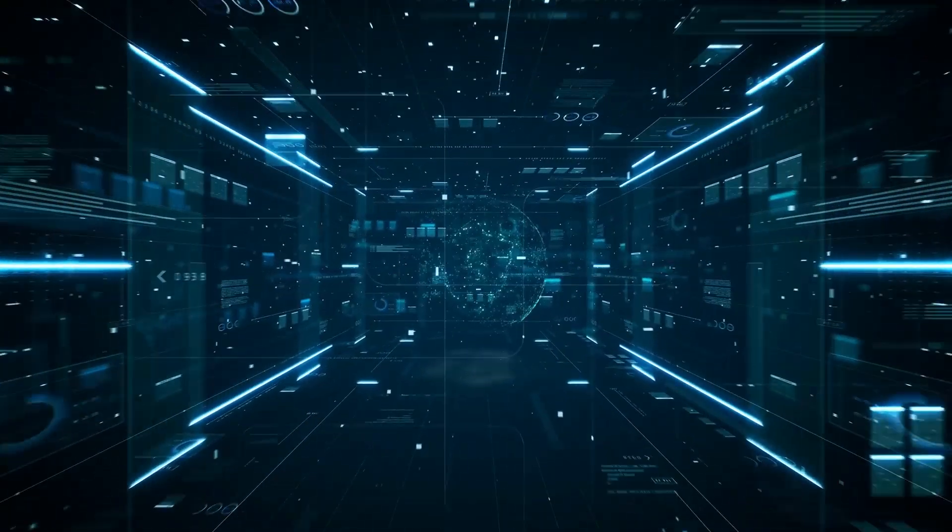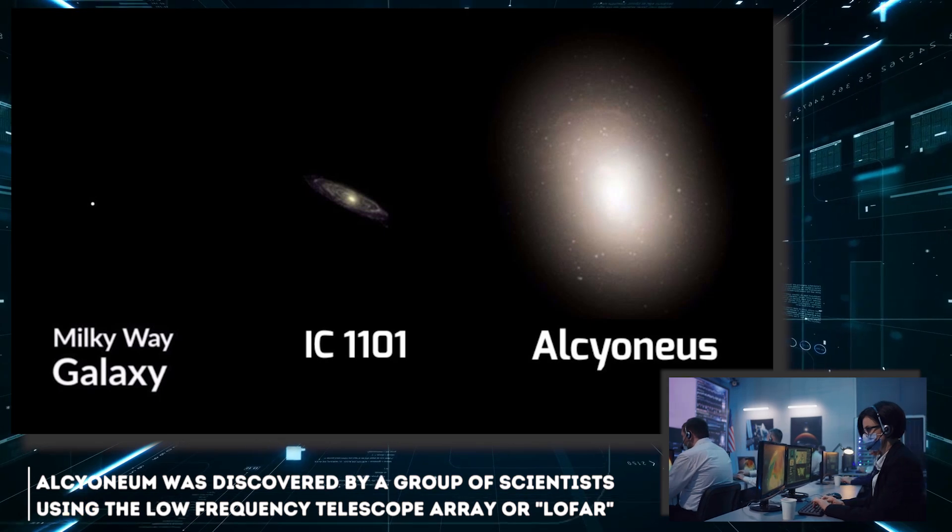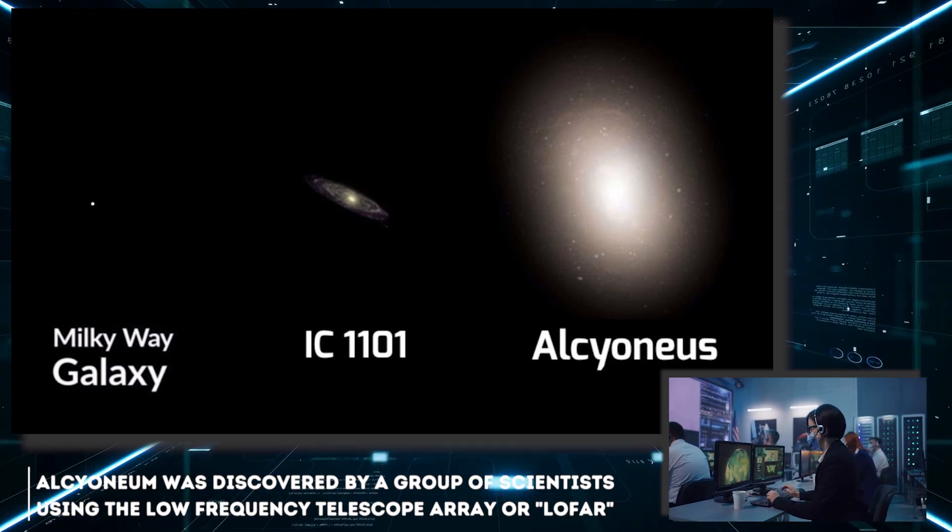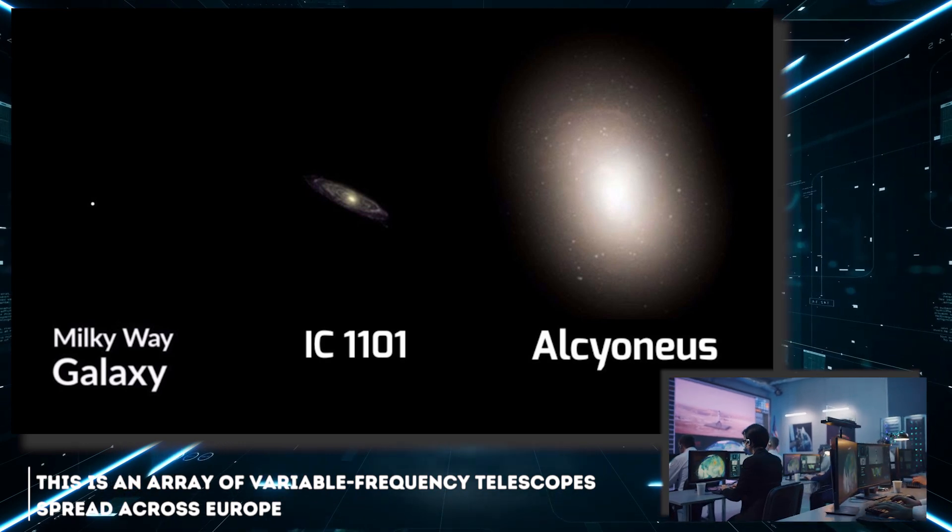At the time, Alcinean was discovered by a group of scientists using the Low Frequency Telescope Array, or LOFAR. This is an array of variable frequency telescopes spread across Europe.